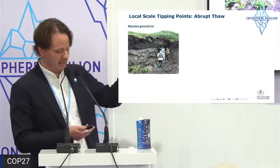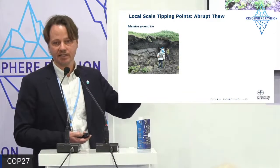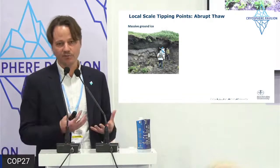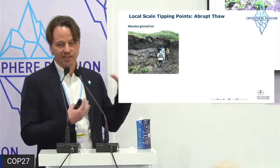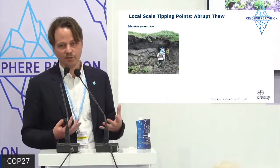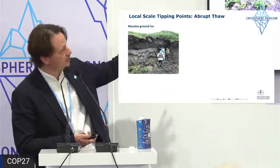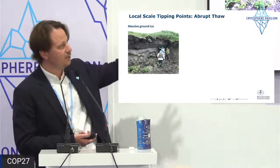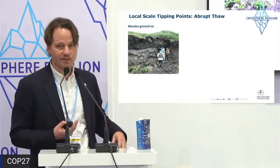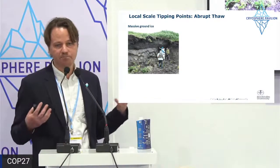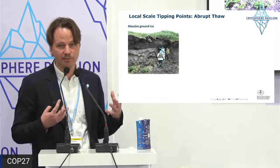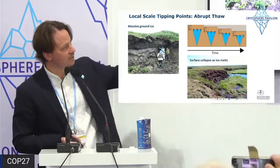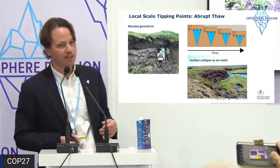With that said, the IPCC has also stated there is very extensive evidence of local-scale tipping points in the permafrost system. At a local scale, when you lose ground ice — which is a big part of the permafrost system — and it melts and drains away as water, it is not going to reform on human timescales even if climate stabilizes again. Here we see an example of a massive ice wedge in the Siberian tundra: roughly 10 meters wide and 30 meters deep, with 50–90% of the ground volume made up of ice.